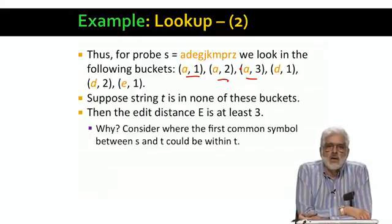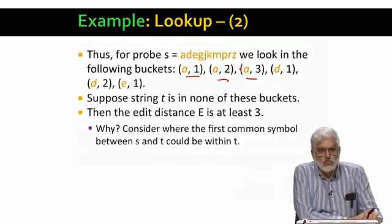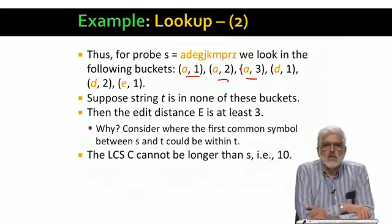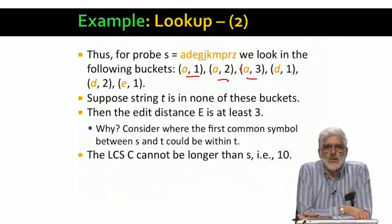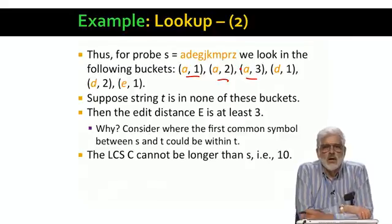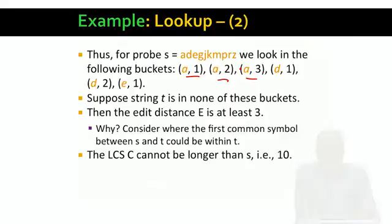And of course, if the first symbol of S and T share is after E, then A, D, and E are not shared. And the LCS of S and T cannot be longer than 10, because that is the entire length of S. Therefore, the Jaccard distance between S and T, which is E over E plus C, is at least three thirteenths, which is about 0.23.